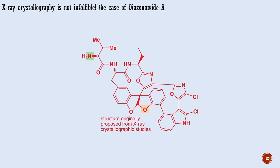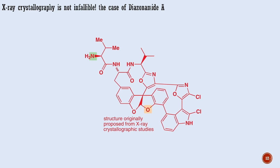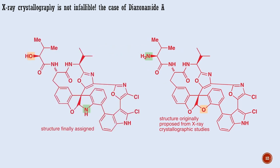A famous example is the antibiotic diazonamide A, which from 1991, when it was isolated from a marine organism, until 2001, when the error was realized, was thought to have an incorrect structure. It has the same mass as the real structure, and X-ray crystallography was unable to tell the oxygen and the nitrogen apart. Only when the compound was synthesized did the error become apparent, and the correct structure was confirmed when synthetic material made in 2002 was identical with the natural product.